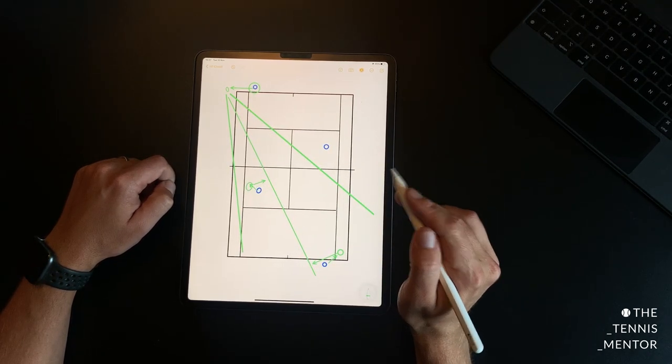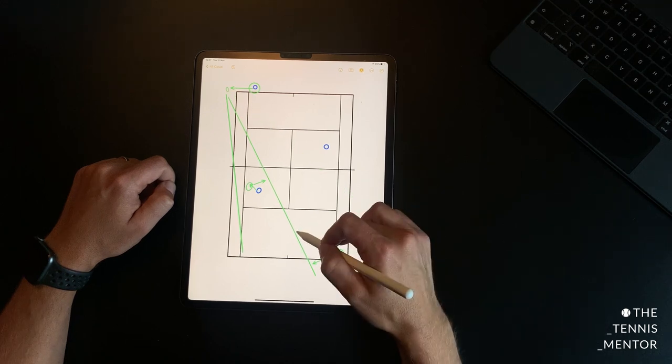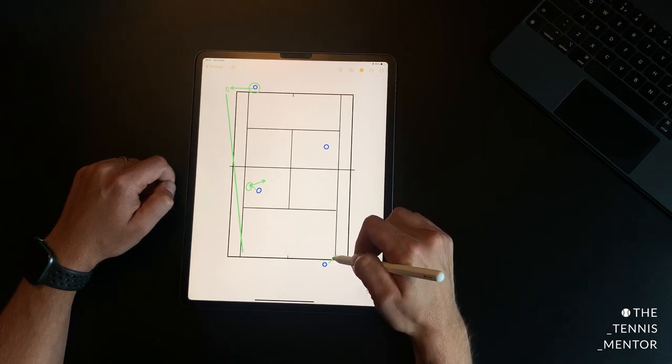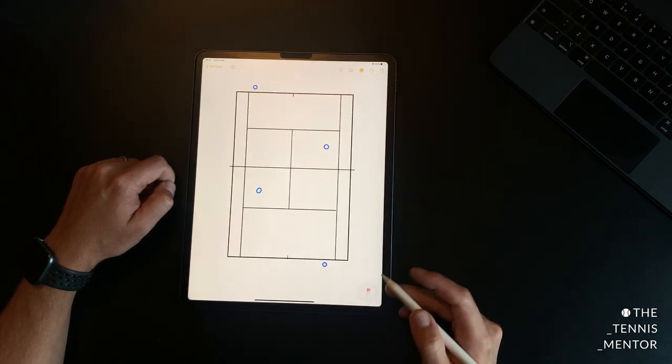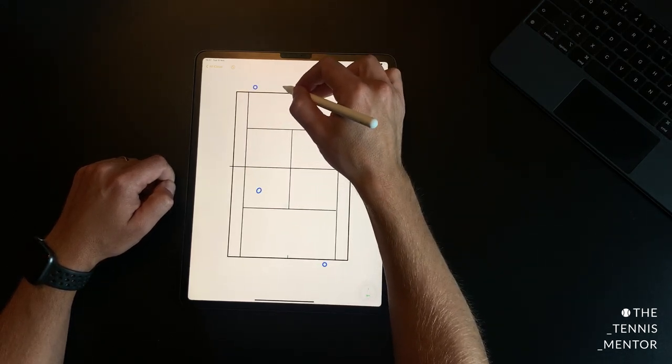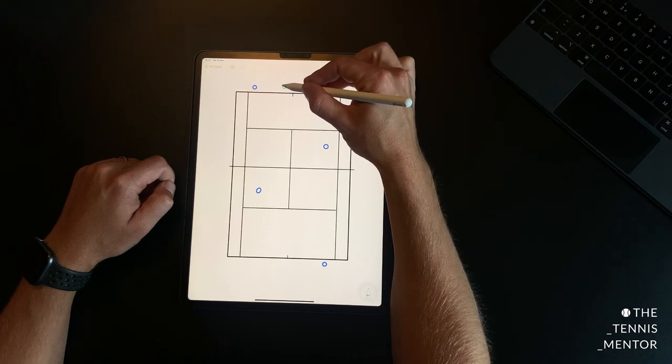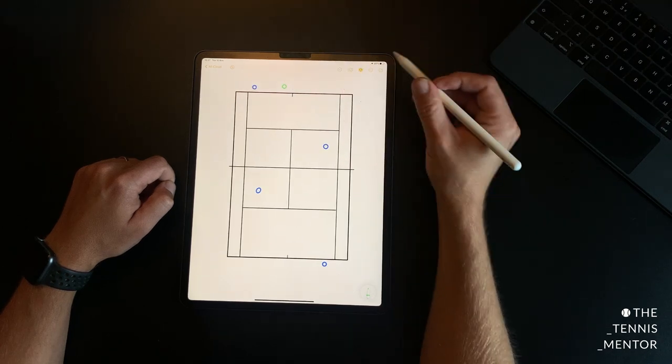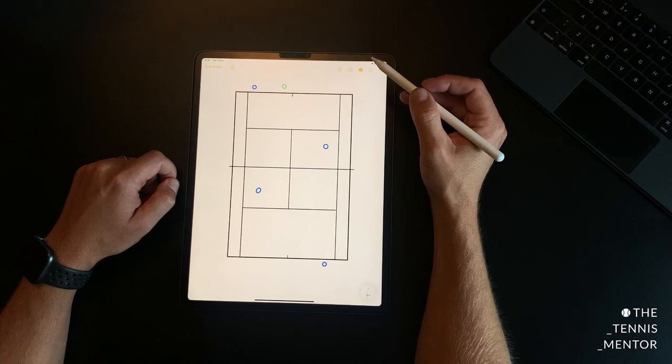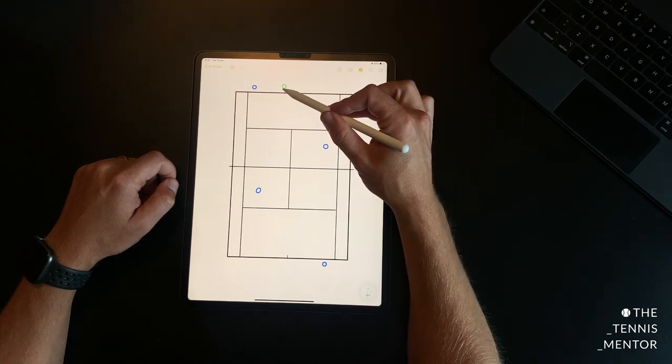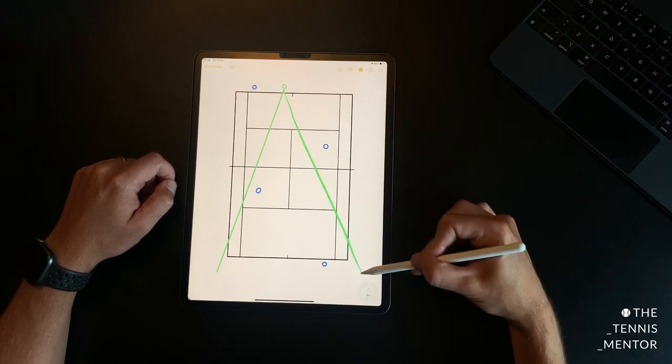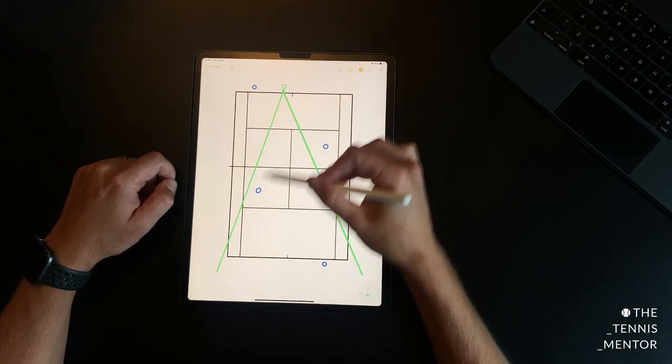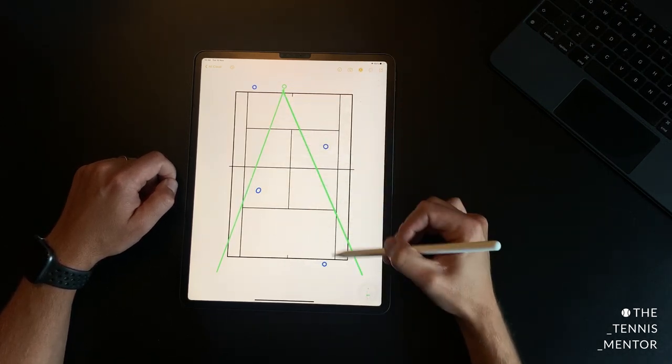Now on the flip side of this if you think about the baseline opponent at the other end receiving a shot from a more central position. If this player here moves across to hit a shot from this position then it goes back to the diagram we had in singles where the two options for the player are to hit the ball here or here. So they have a much more narrow channel down the centre of the court.